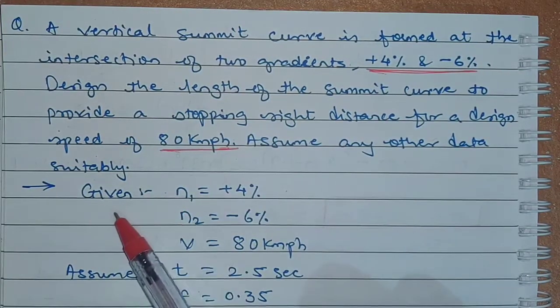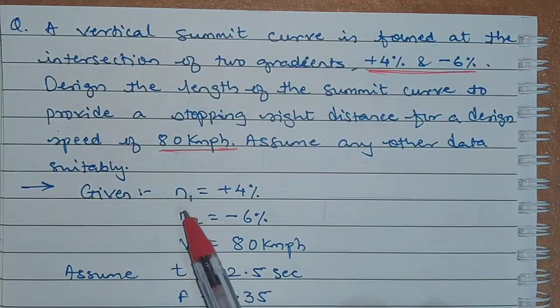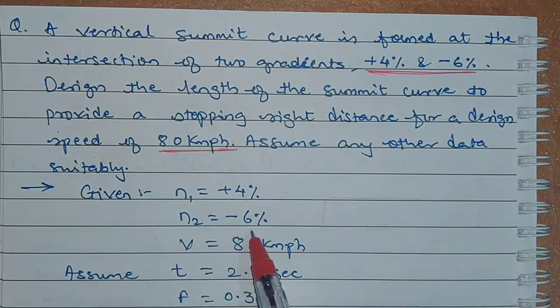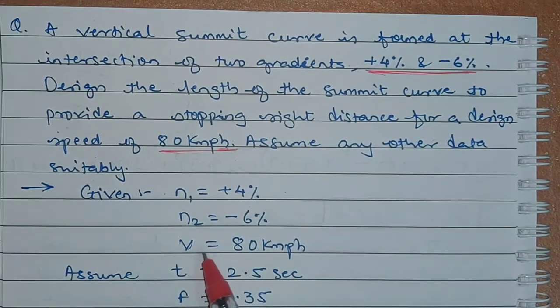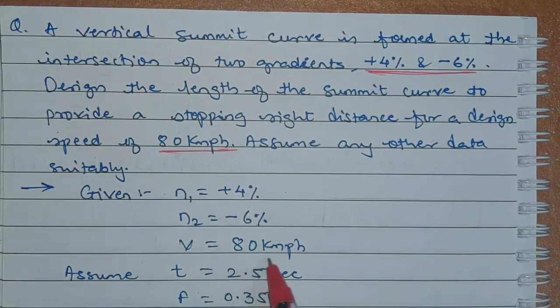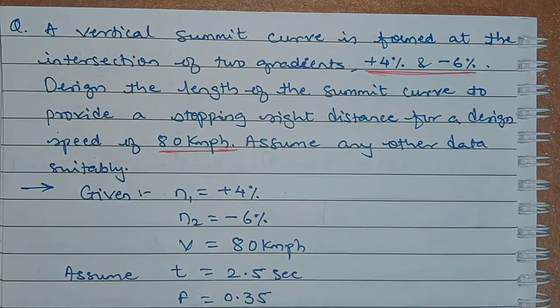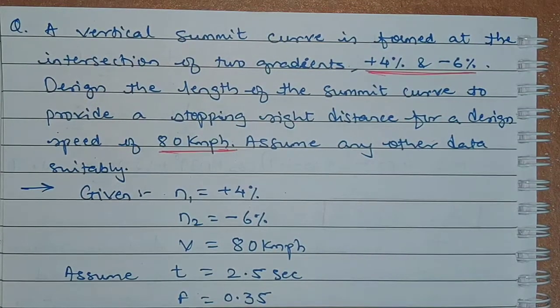So the given data to us is N1 equals plus 4%, N2 equals minus 6%, whereas the design speed is 80 km per hour. Here we assume time t as 2.5 seconds and coefficient of friction f as 0.35.